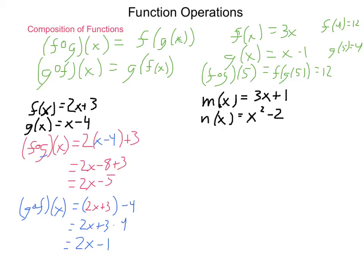Now, let's look at it for m and n. If I do m composed with n of x, I get 3 times whatever n is plus 1. And n is x squared minus 2. Distributing, we get 3x squared minus 6 plus 1, which is 3x squared minus 5.